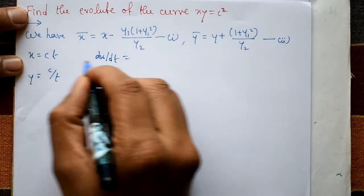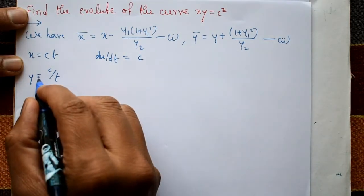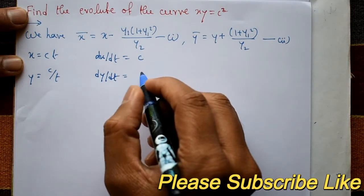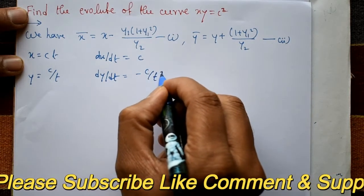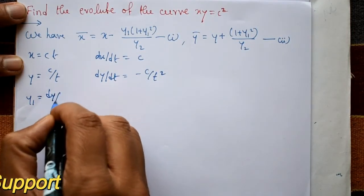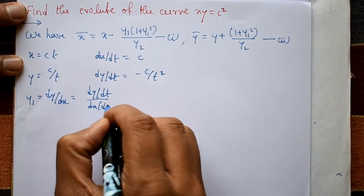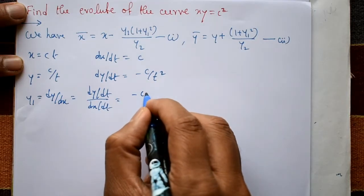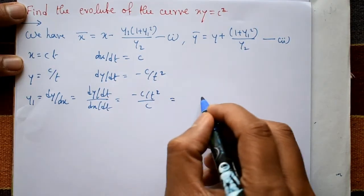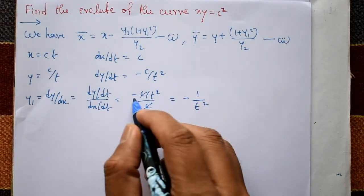Differentiate x with respect to t: dx by dt is equal to c. Again, y equals c by t; differentiate y with respect to t, we get minus c by t squared. Now y1 is dy by dx, which means dy by dt divided by dx by dt. So dy by dt is minus c by t squared, divided by dx by dt which is c. The c's cancel, so y1 is minus 1 by t squared.